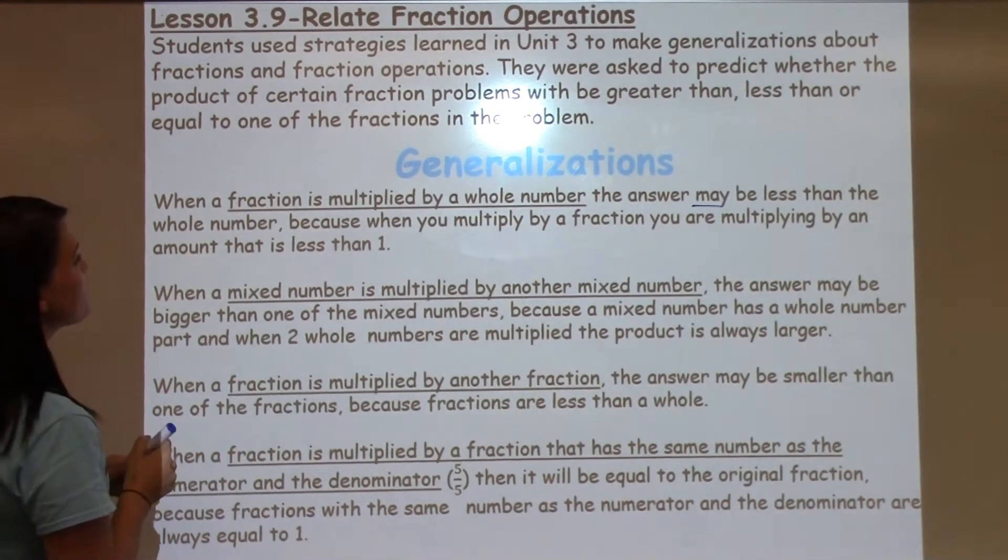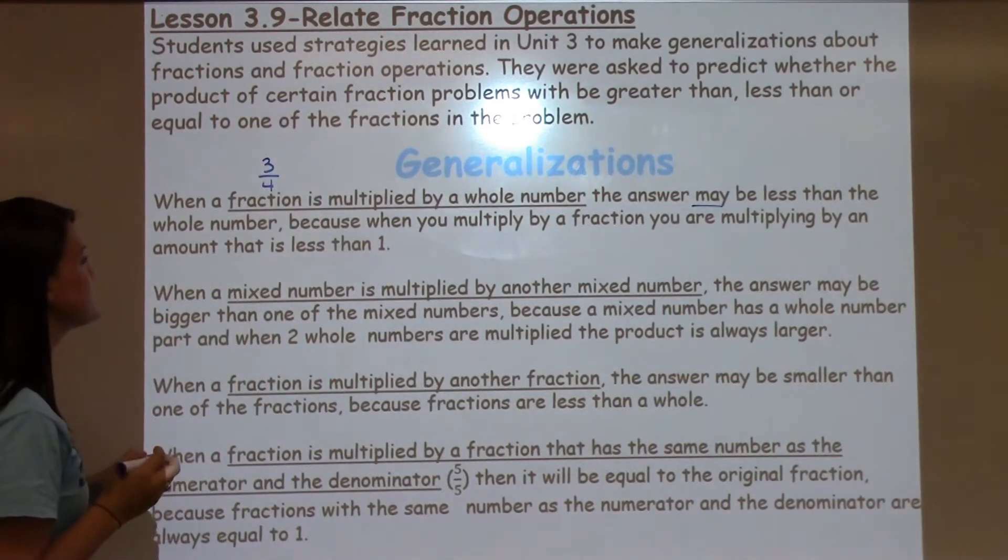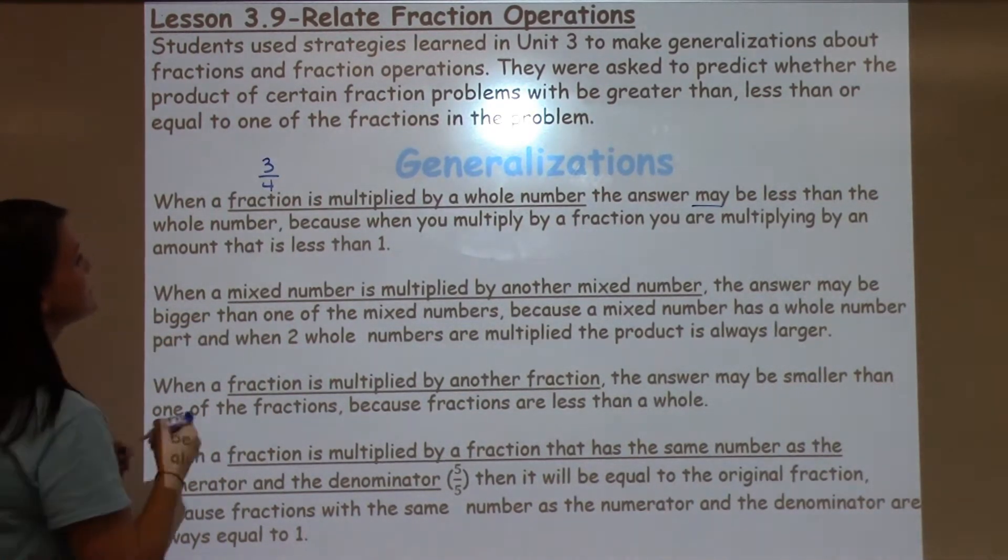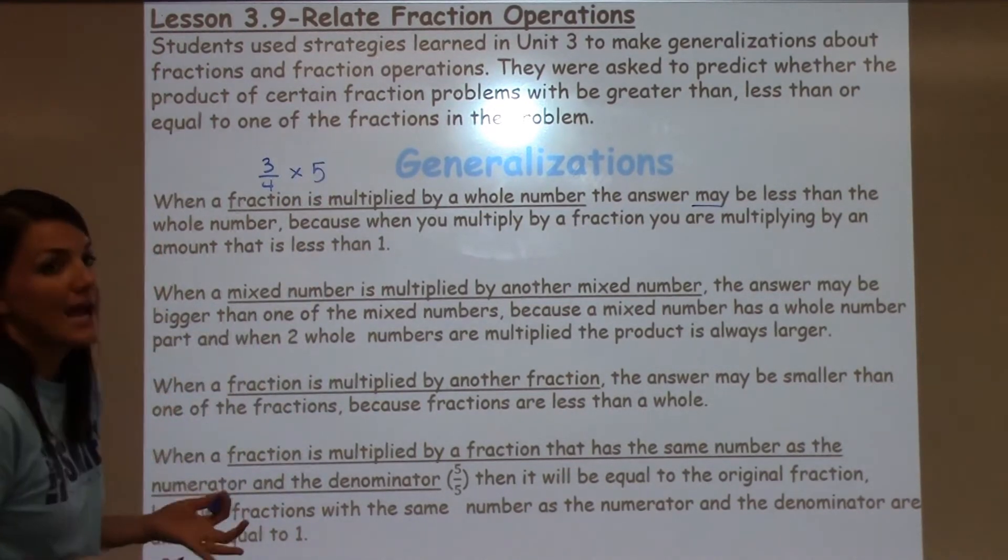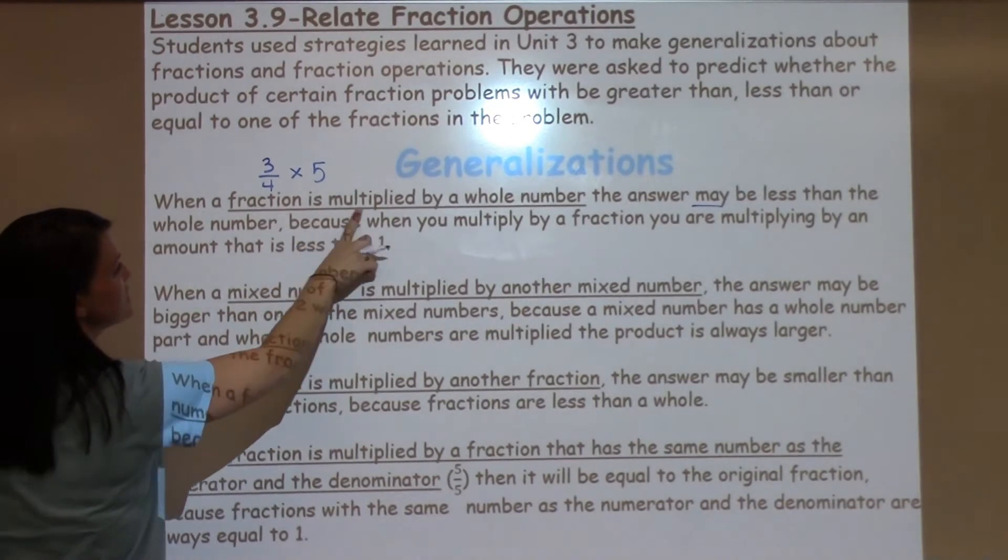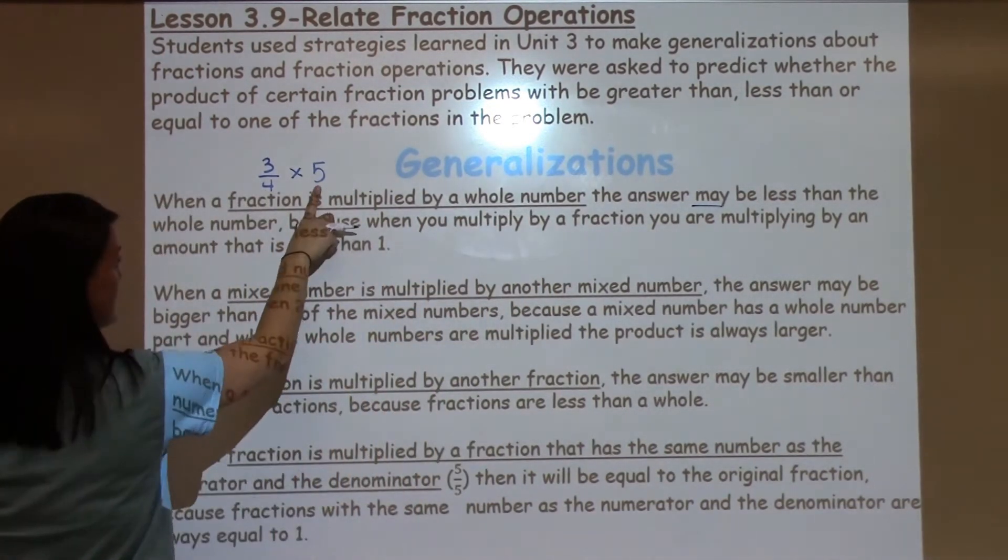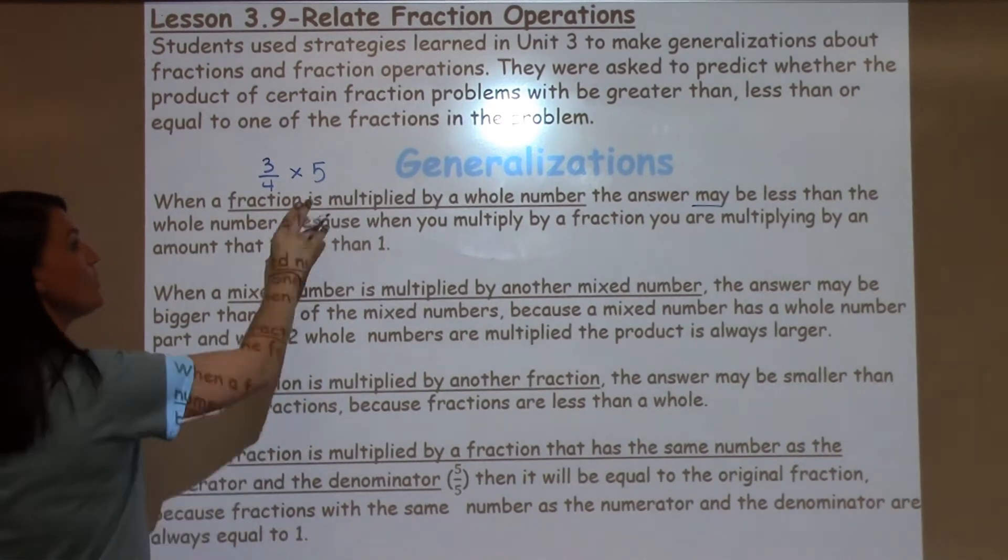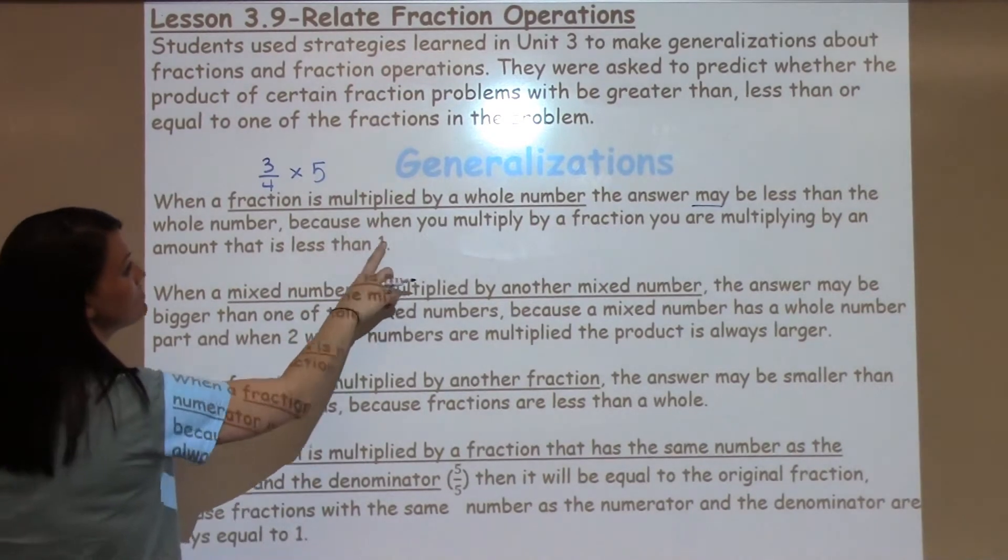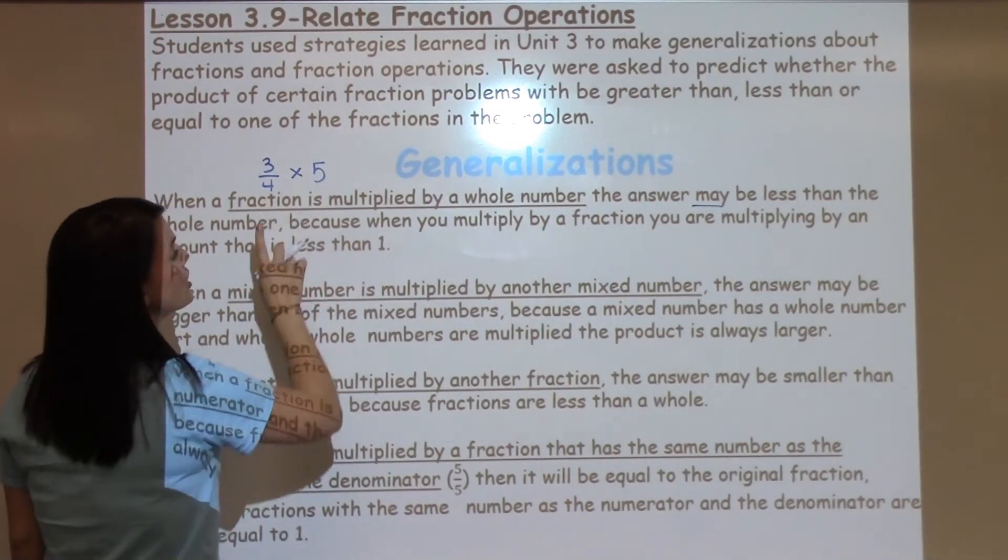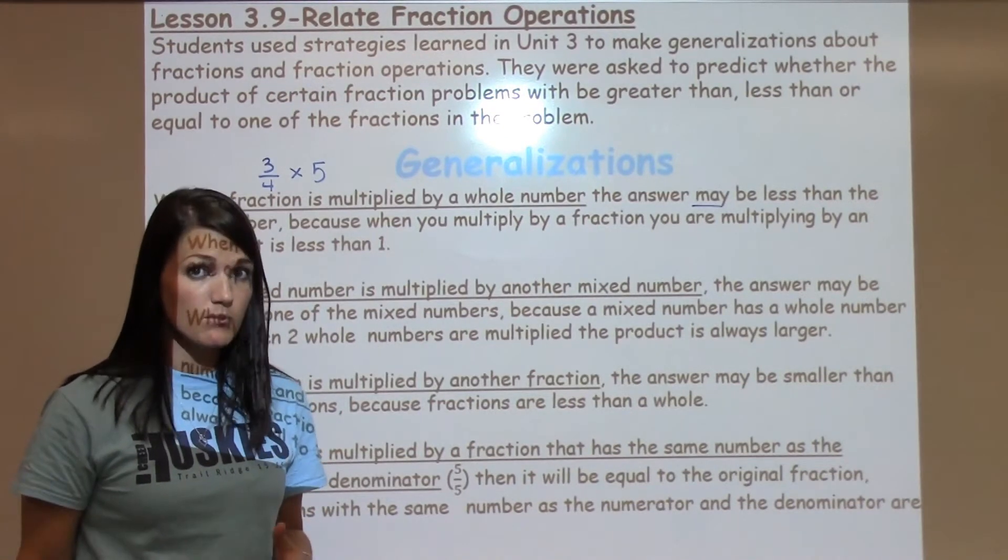So the first one says, when a fraction, we'll use 3 fourths as an example, when a fraction is multiplied by a whole number, so I'm going to use 5, 3 fourths times 5. When a fraction is multiplied by a whole number, the answer may be less than the whole number. So in this case, when I multiply these, they may be less than 5. That happens because when you multiply a fraction, you're multiplying by something that is smaller than 1, less than 1.